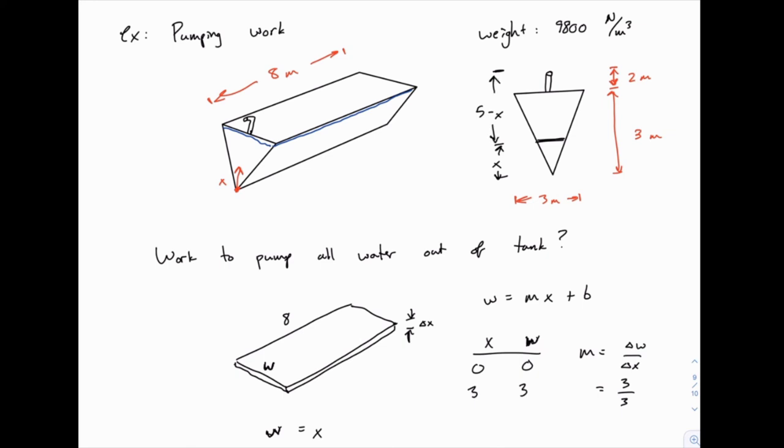So we've seen that a couple times now, and that pattern starts to emerge. Hopefully it's pretty clear at this point that if we're trying to move a total distance of five and we've already measured x up from the bottom of the tank, the remaining distance is the difference between that and the five. So five minus x.